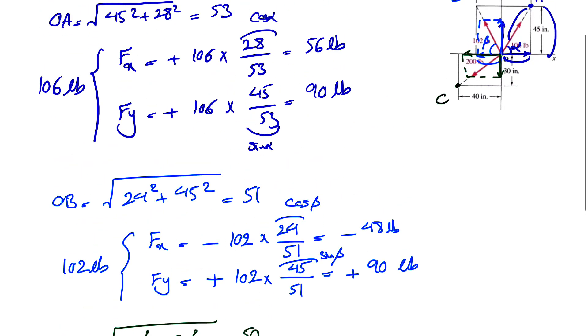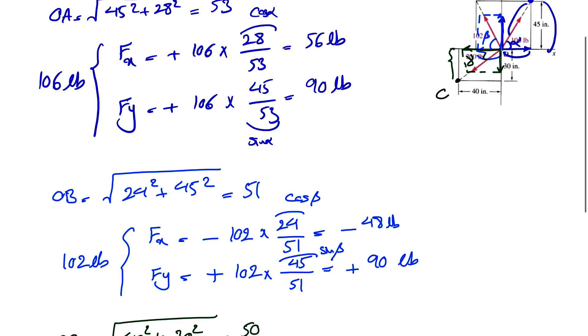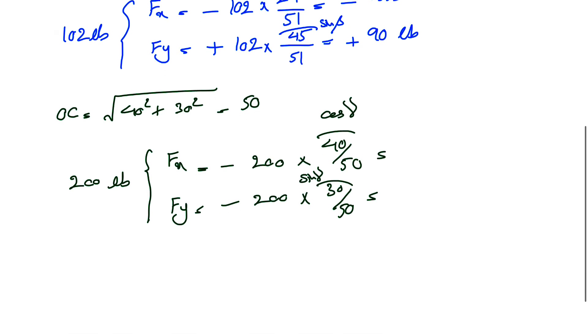And this time we have cosine of this angle here. We can call it gamma. So the cosine would be the adjacent over hypotenuse, 40 over 50. And we have 30 over 50, for the opposite, which is this side. Gamma, this will be our cosine of gamma. And this will be our sine. And all we need to do is calculate each of these. We know 200 divided by 50 is 4. So this will be minus 160 pounds. And this will be minus 120.